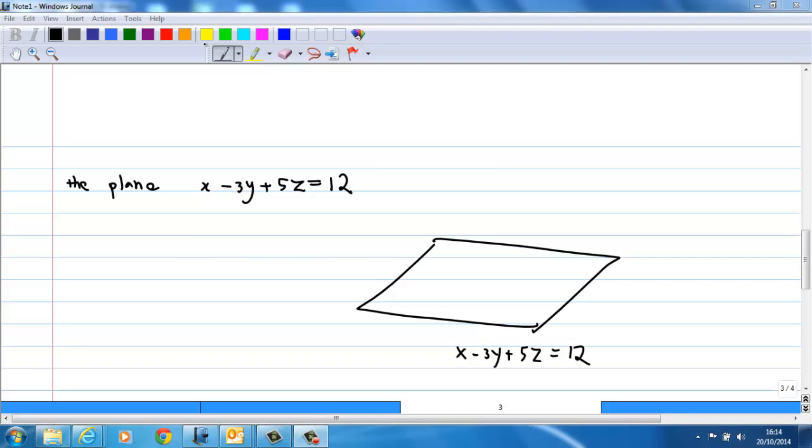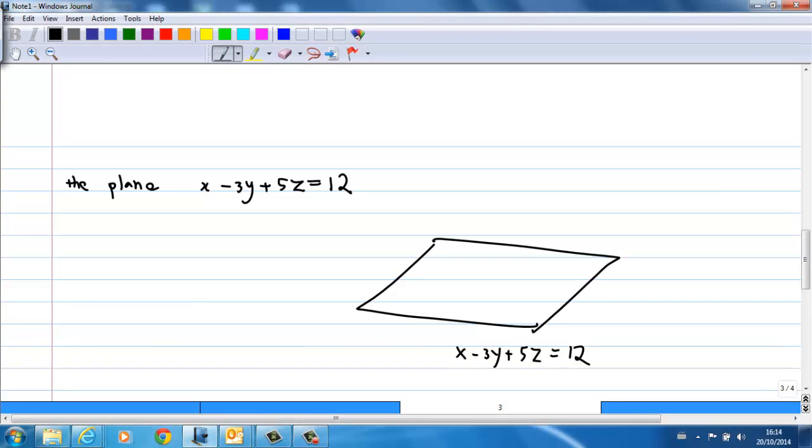Next, consider the plane given by the equation x - 3y + 5z = 12. Now, the vector perpendicular to the plane is called the normal to the plane. Let's call this vector n. And this vector n is (1, -3, 5), where you can read off from the coefficients of x, which is 1, -3, and 5.